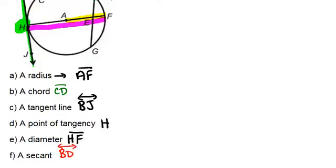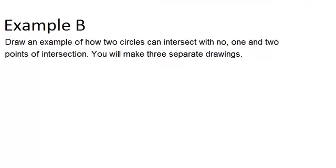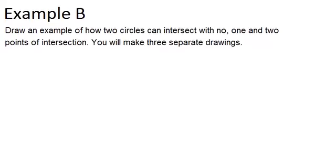Let's go to example B. Draw an example of how two circles can intersect with no, one, and two points of intersection. You will make three separate drawings. Okay, so clearly two circles could not intersect if they were in different places like this. So this would be no points of intersection.